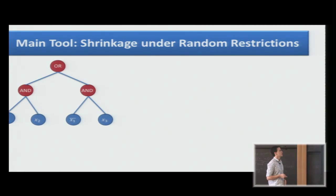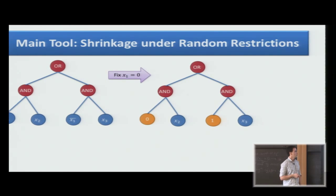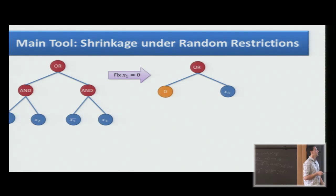The main tool we use is shrinkage under random restriction. Let's see an example of how this works. This is the formula from the first slide. Let's now fix one of the variables, x1, to the constant 0. Two of these leaves became a constant. Now we can apply simplification rules: 0 and something is 0, 1 and something is something. We can apply them again, and the formula shrunk from size 4 to size 1 under this restriction.